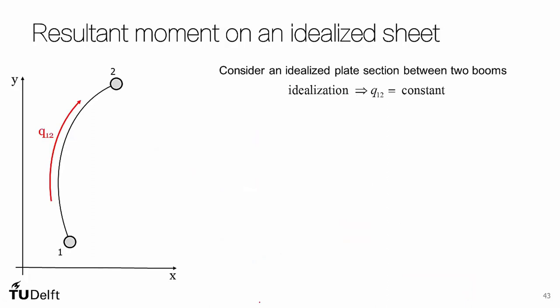Now let's look at the resultant moment of an idealized sheet. We have to do this sometimes when analyzing closed sections and calculating moments about a point, or for finding shear center in open sections. We still have constant Q12 due to our idealization, but now we want to find the moment due to this shear flow acting between booms 1 and 2.